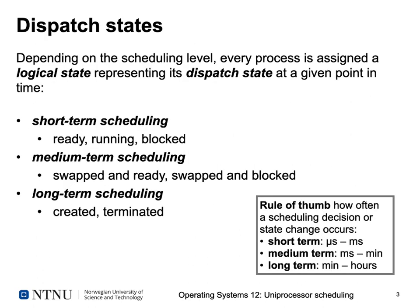When we look at the life of a process, we have already seen the different states in a simple diagram and then in a more complex diagram. We need to consider additional states called dispatch states. Depending on the level at which you do CPU allocation, every process is assigned a logical state representing its dispatch state at any given point in time. We have short-time scheduling, which we looked at in simple terms before when we looked at process states.